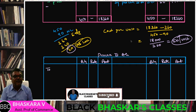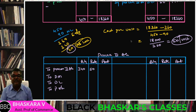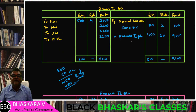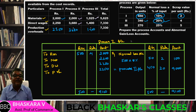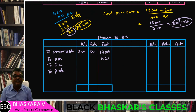For Process 3 account: input is 340 units at ₹50 = ₹17,000. Direct material is ₹1,025. Direct labor is ₹1,400. Production overhead is ₹1,400. Normal loss is 25% of 340 units = 85 units. Scrap value at ₹5 per unit = ₹425.